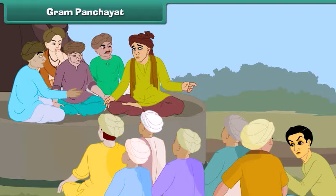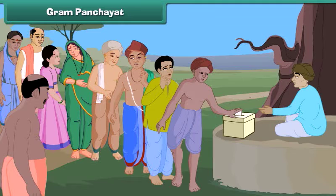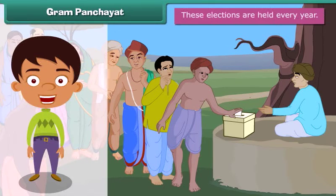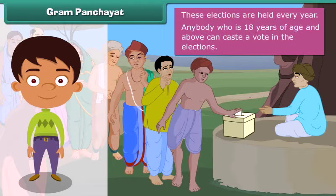A Gram Panchayat is the local government of a village. It is formed by members elected by the villagers in the Gram Panchayat elections. These elections are held every five years. Anybody who is 18 years of age and above can cast a vote in the elections.